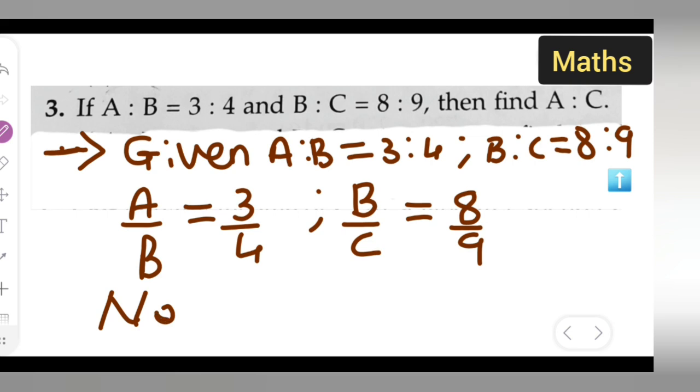Now we need to find A upon C. Now A upon C is equal to nothing but A upon B multiplied by B upon C.